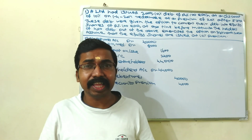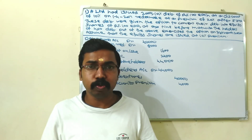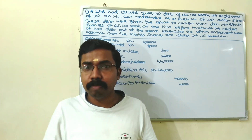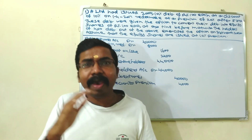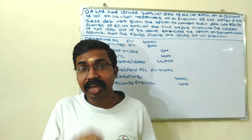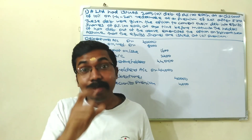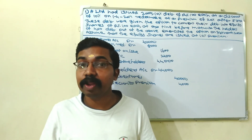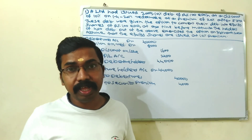We will get to know about two different situations. Issue is at a discount, and we will adjust the discount to the P&L account. The balance is adjusted to the discount on issue of debentures account. We need to understand how to pass the due journal entry.